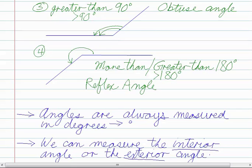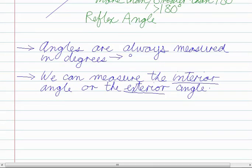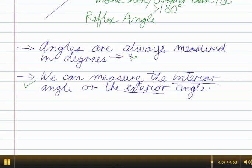Now just to be clear here, all angles have an interior and an exterior angle. Angles are always measured in degrees, which is this symbol here. Okay, that's it.